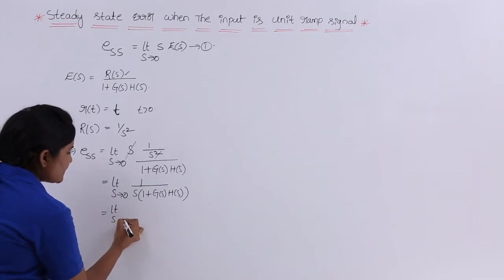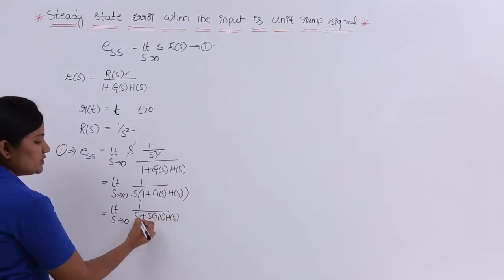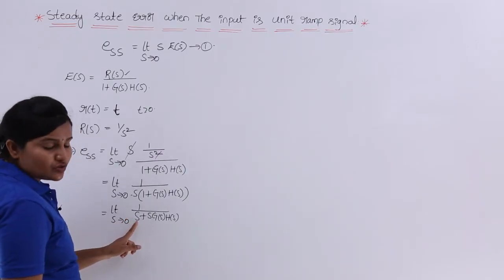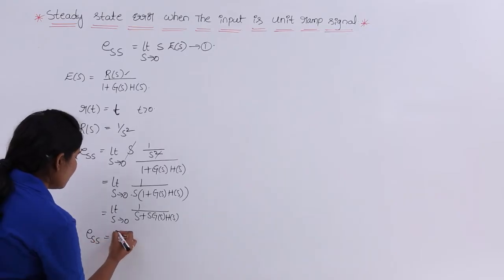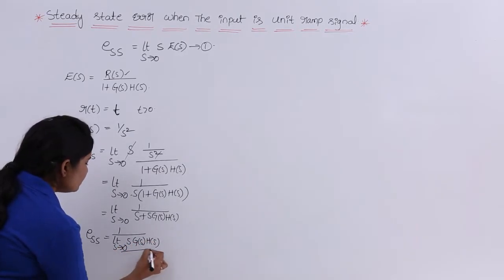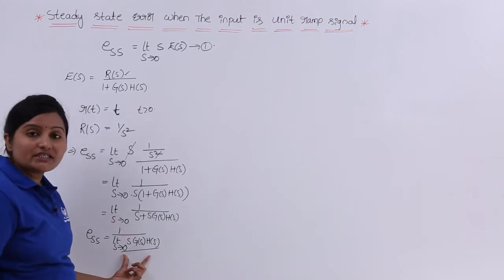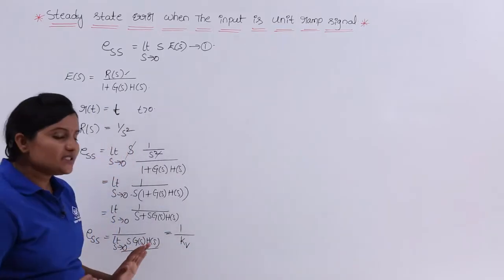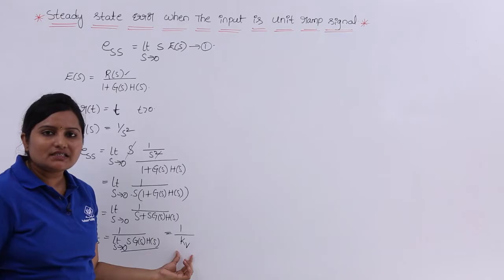In the next step, multiplying S inside gives S times 1/S plus S into G(S) into H(S). Taking the limit inside: for the numerator there is a constant, so no limit is needed. Applying the limit as S tends to 0, the first term becomes 0, leaving 0 plus limit S tends to 0 of S into G(S) into H(S). So ESS equals 1 by KV. This means the steady state error when the input is unit ramp equals 1 by KV, where KV is the velocity error constant.